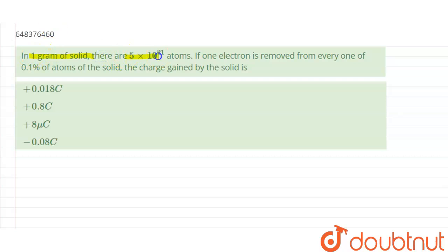Students, the question is: In one gram of solid, there are 5 into 10 power minus 21 atoms. If one electron is removed from everyone of 0.1 percentage of the atoms of solid, the charge gained by the solid is?